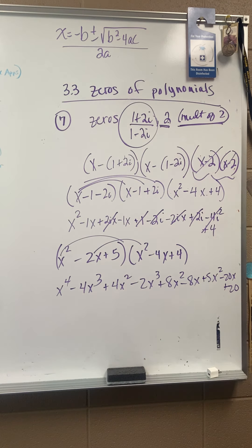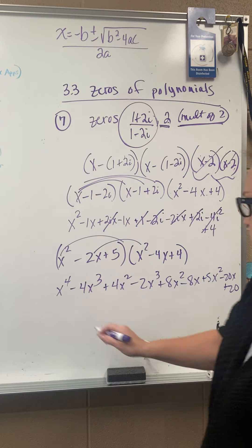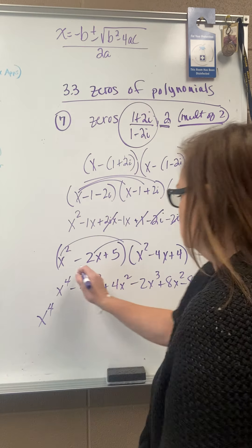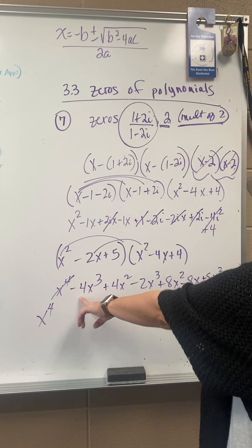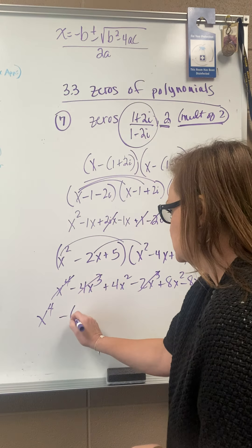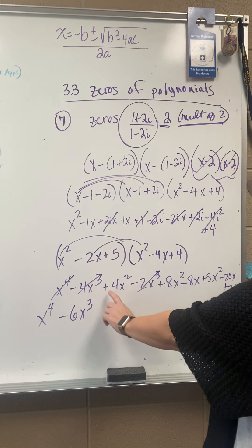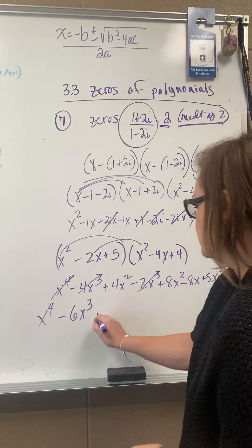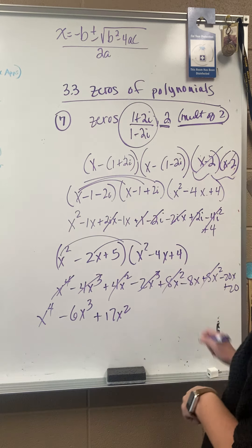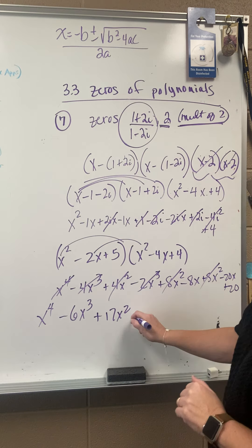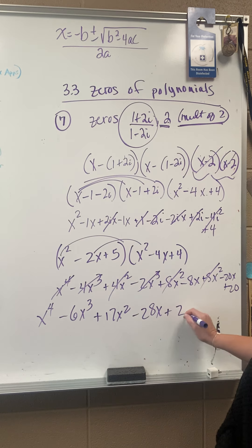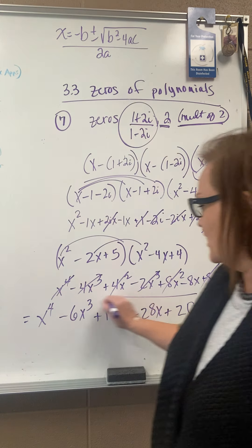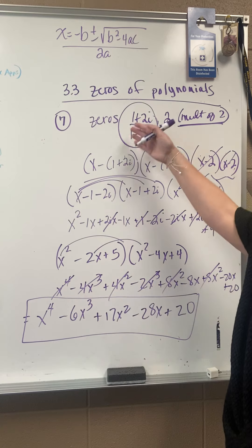Then combine any like terms. Starting with x to the fourth — the largest exponent, which makes it a fourth degree polynomial. Then the cubes: negative 4x cubed and negative 2x cubed is negative 6x cubed. Then 4x squared, 8x squared, and 5x squared: 4 and 8 is 12, plus 5 is 17x squared. Then negative 8x and negative 20x is negative 28x. And finally, the constant of 20. So there is your polynomial that when solved gives us those zeros.